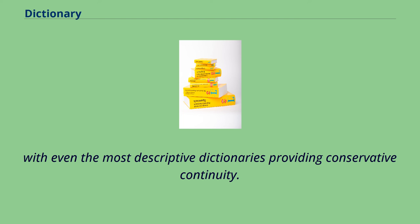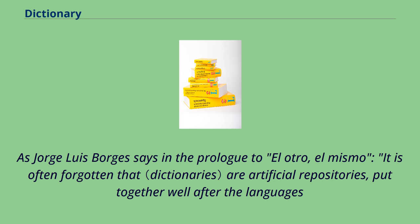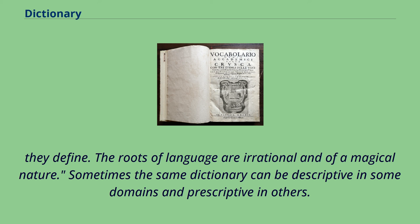In the long run, however, the meanings of words in English are primarily determined by usage, and the language is being changed and created every day. As Jorge Luis Borges says in the prologue to El Otro, El Mismo, it is often forgotten that our artificial repositories, put together well after the languages they define — the roots of language are irrational and of a magical nature.